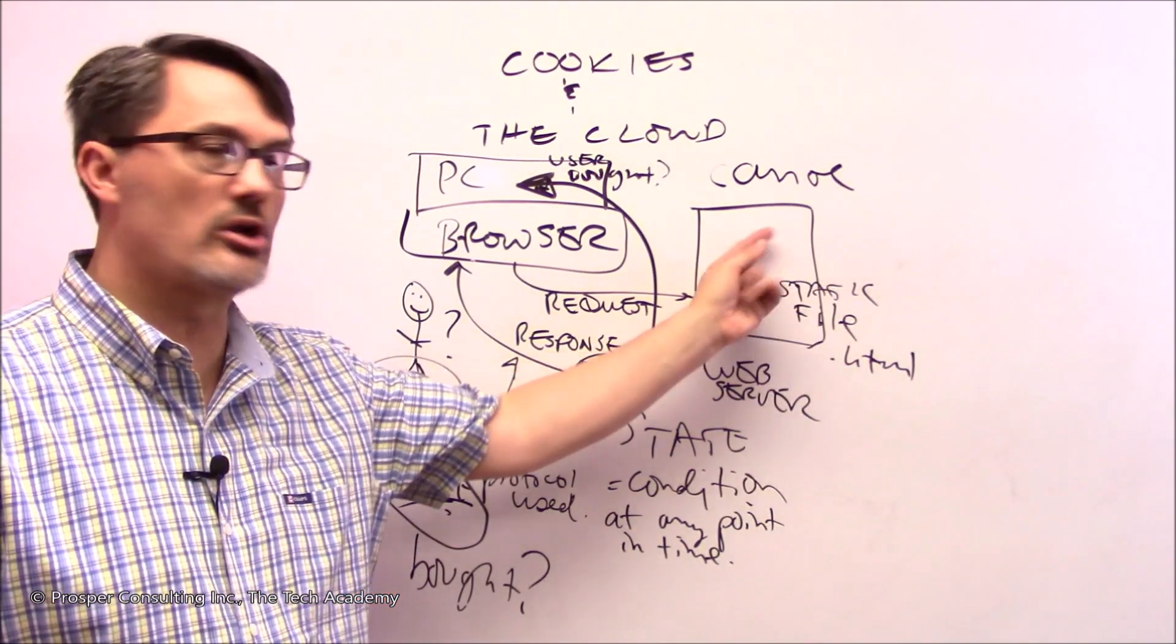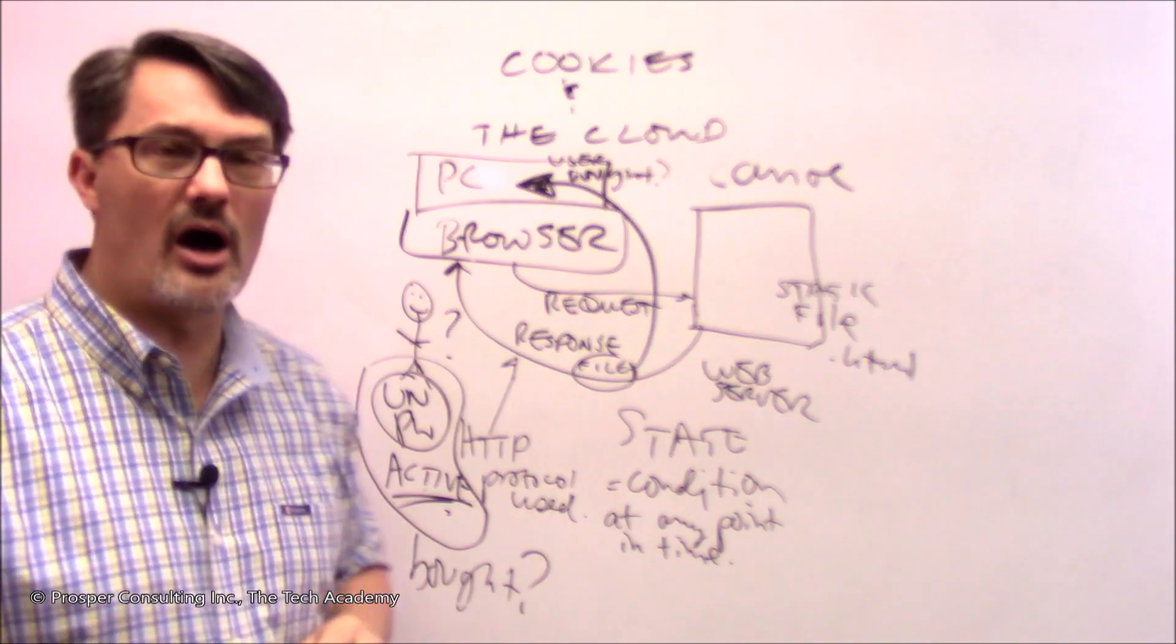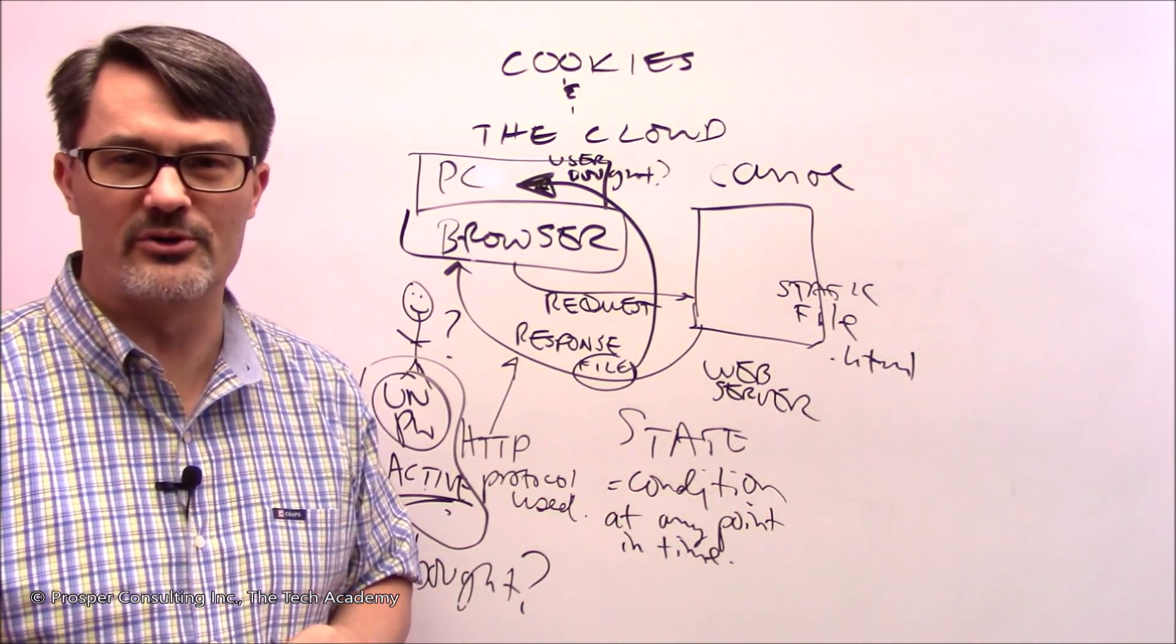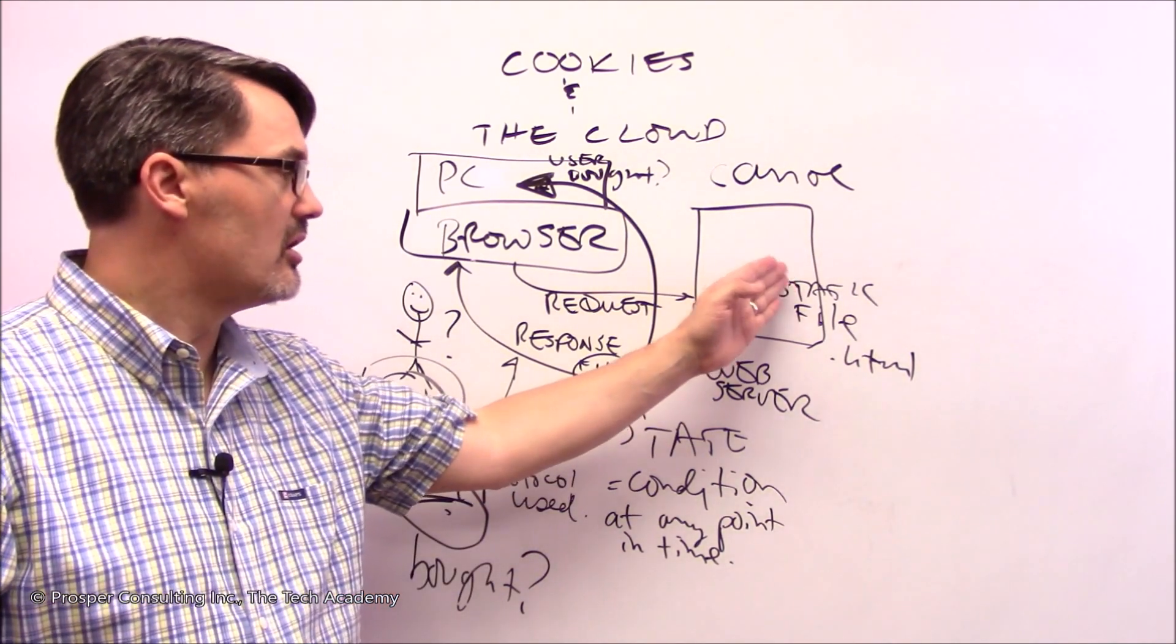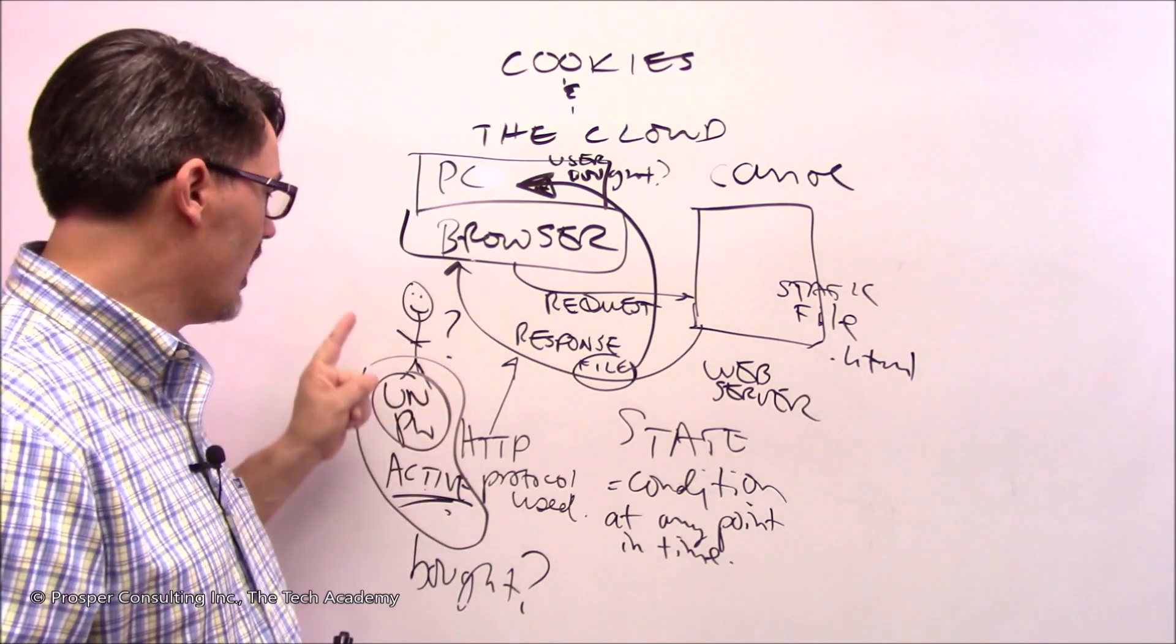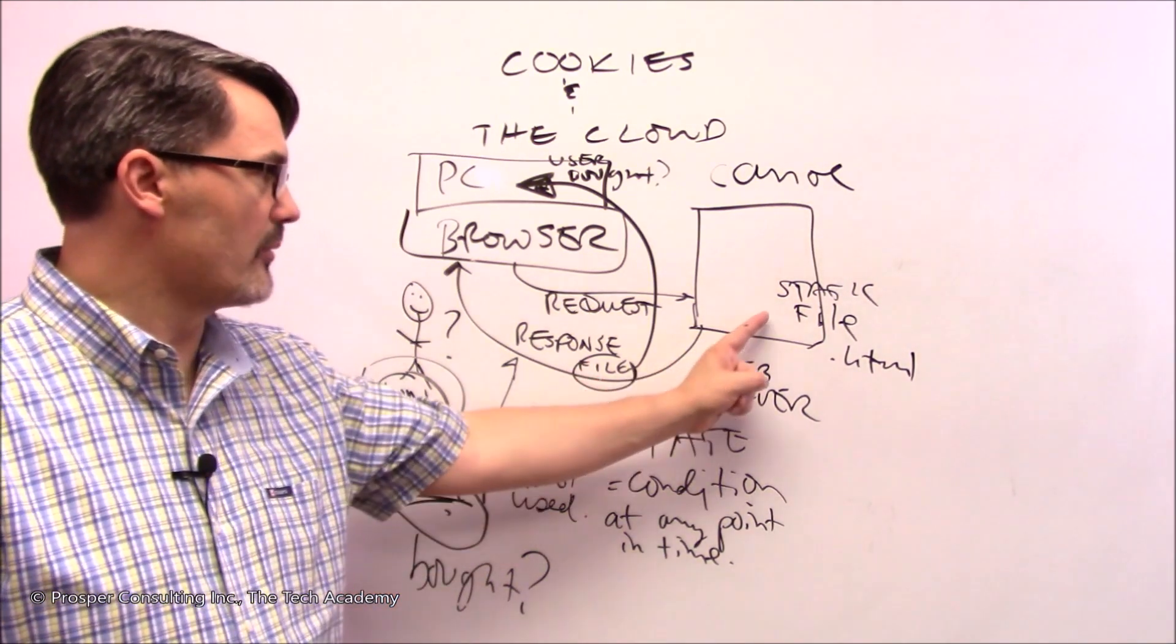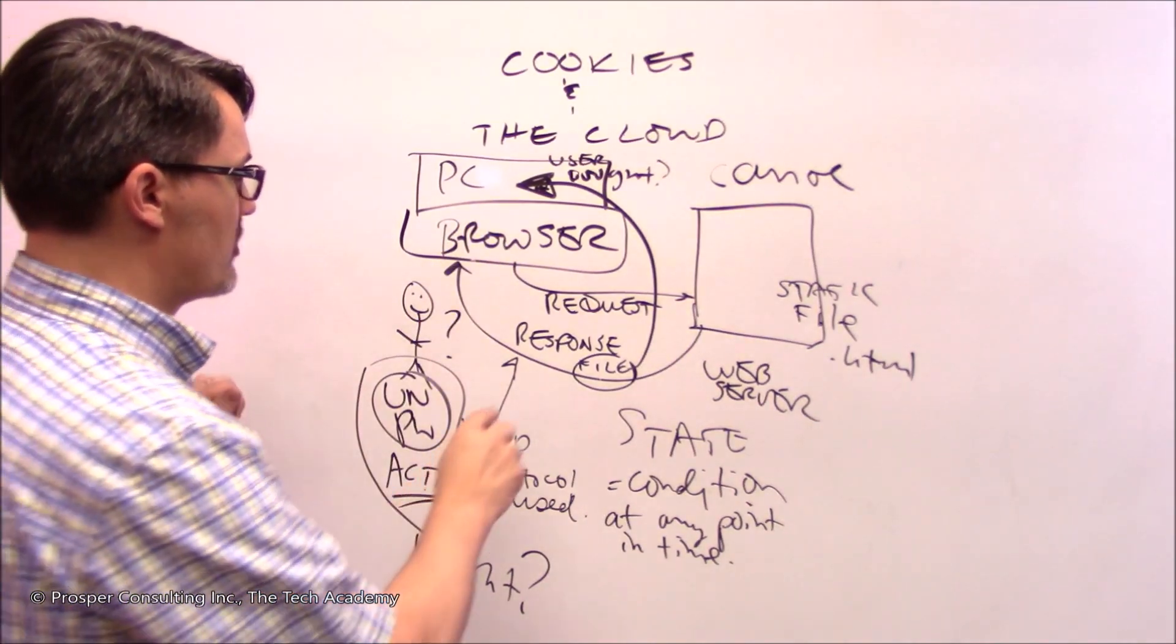The web server can change the content of the web page and send back a page where part of it says to Bob, 'Congratulations, as an existing customer, you're authorized a 50% discount.' Well, probably wouldn't do that if they lose money, but you get the idea. They would be able to change the data sent back to the browser based on the state of that user. And the state here is, have they bought or not?